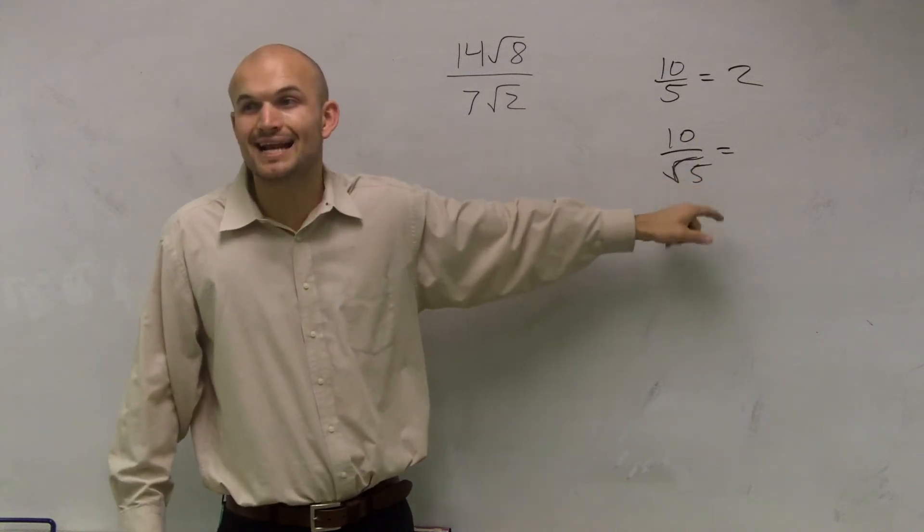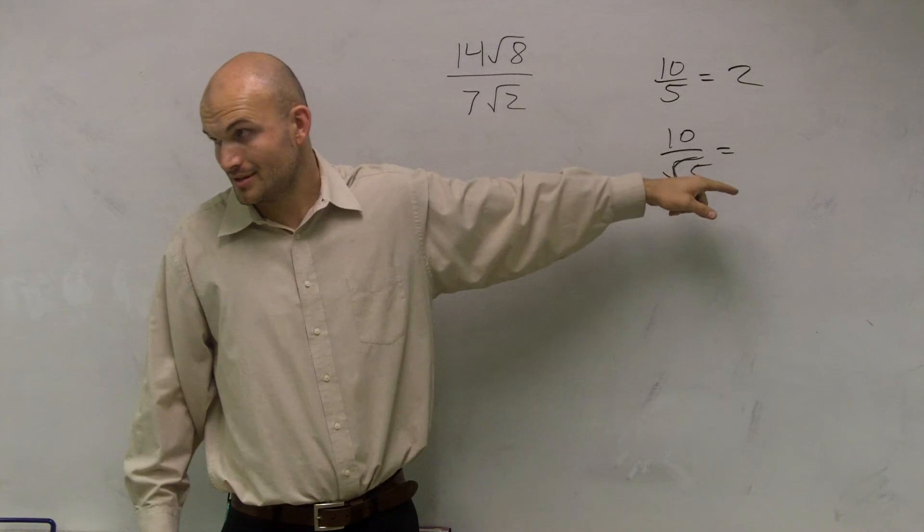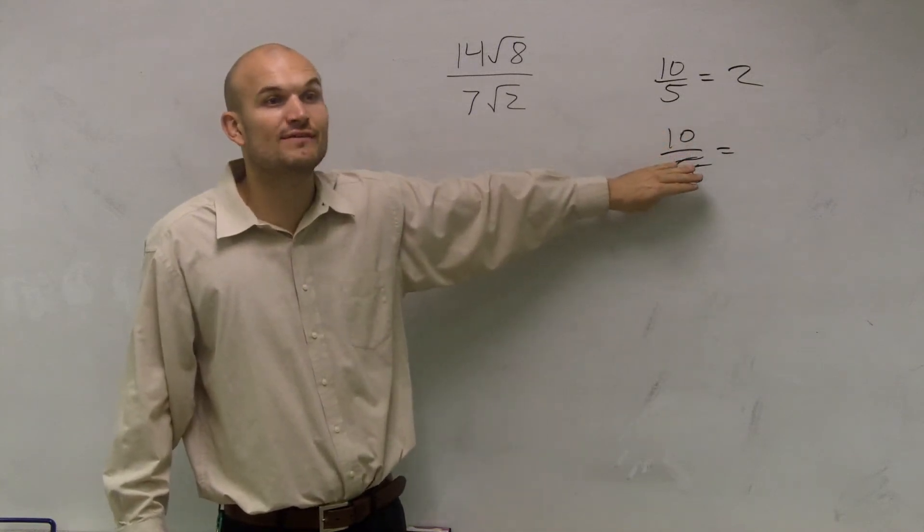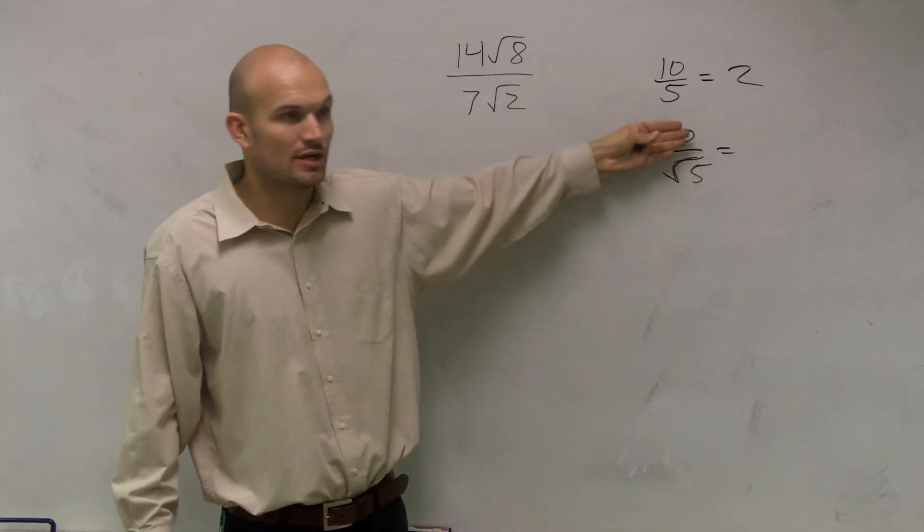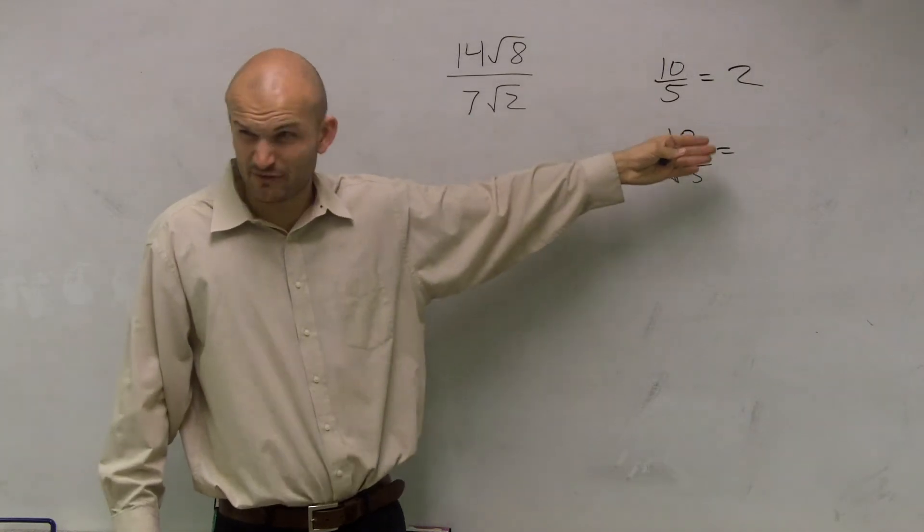So, how can you possibly divide something that you don't even know where it stops into another number? Does that make sense? How kind of difficult that already seems?